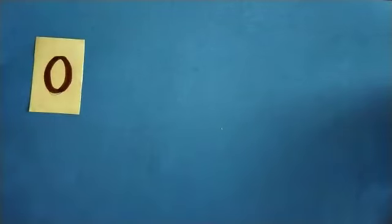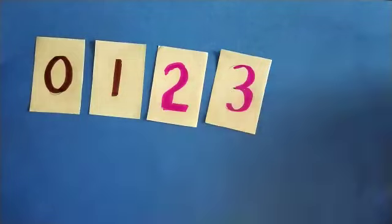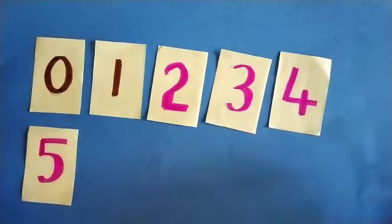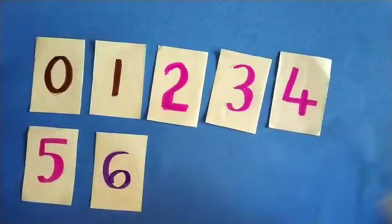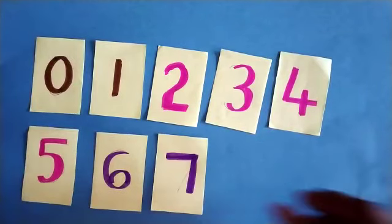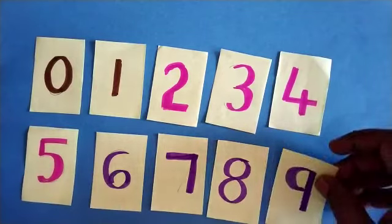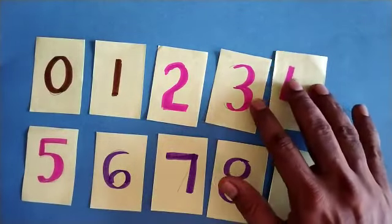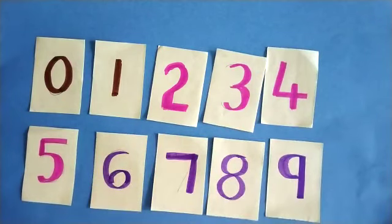For this you need the number cards starting from 0 to 0, 1, 2, 3, 4, 5, 6, 7, 8, 9. Like this you have to make the card starting from 0 to 9. Now out of this, from this you will take two one digit numbers and you have to make two digit numbers out of this.